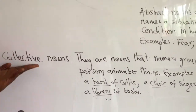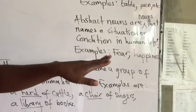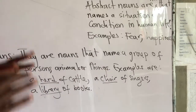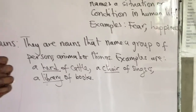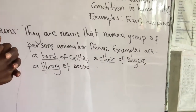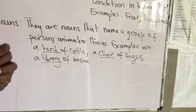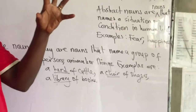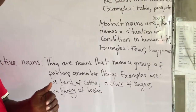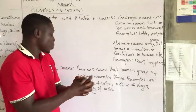The last type is collective nouns. As the word 'collective' suggests, they name a group — a group of persons, animals, or things. If you have a group of persons and want to describe them, you use collective nouns. For instance, if you step out and see many people together, a nice way to express that is: 'Look at a crowd of people.' The word 'crowd' describes the people together — that is collective.